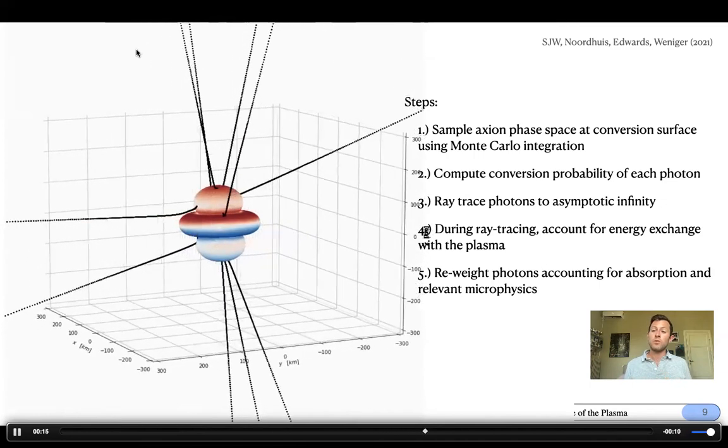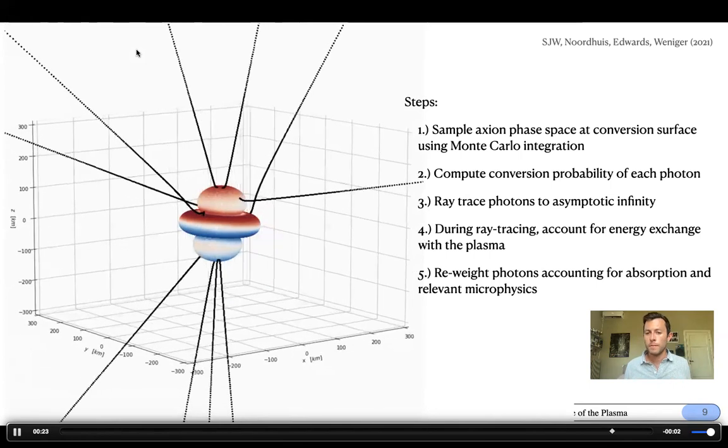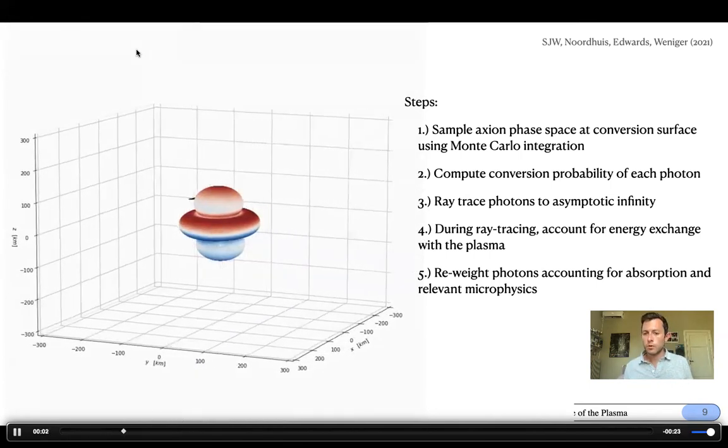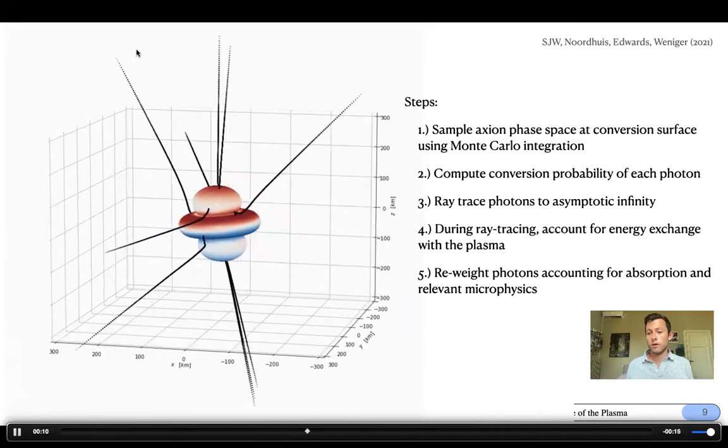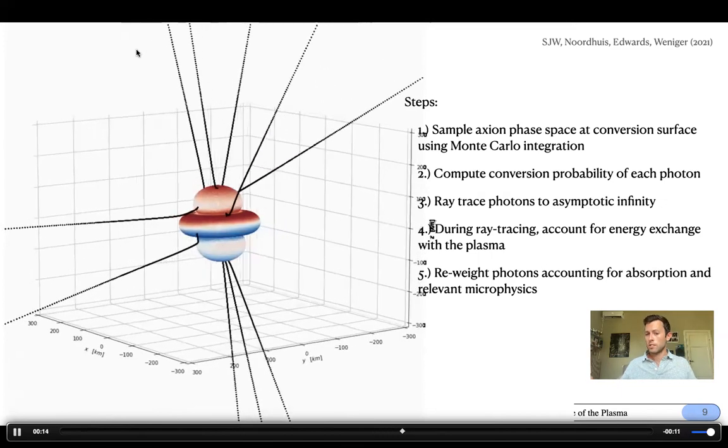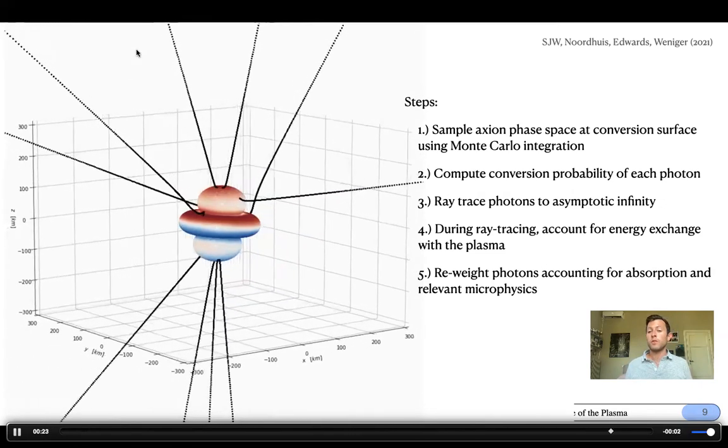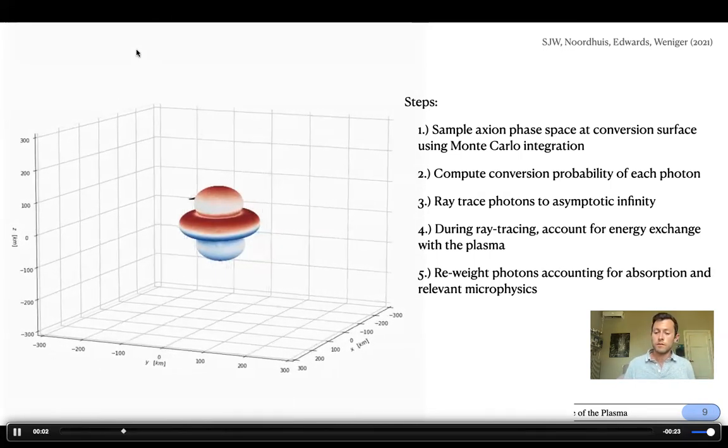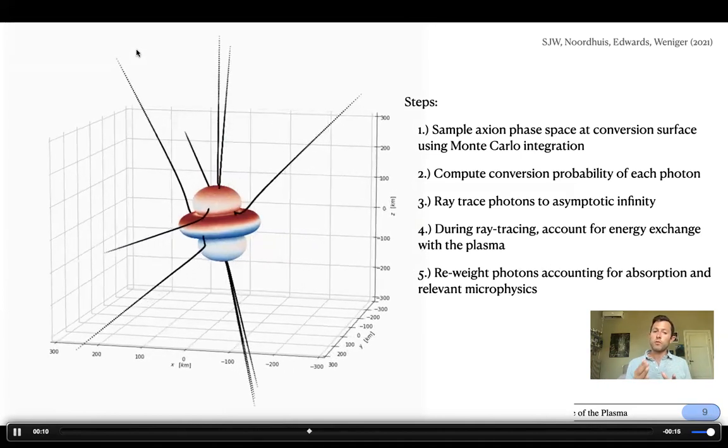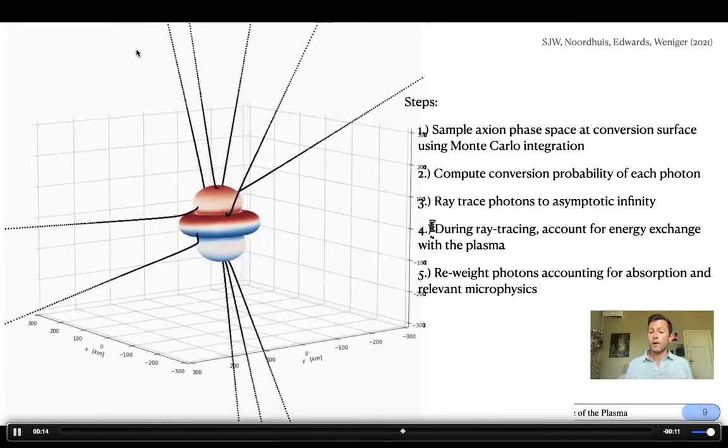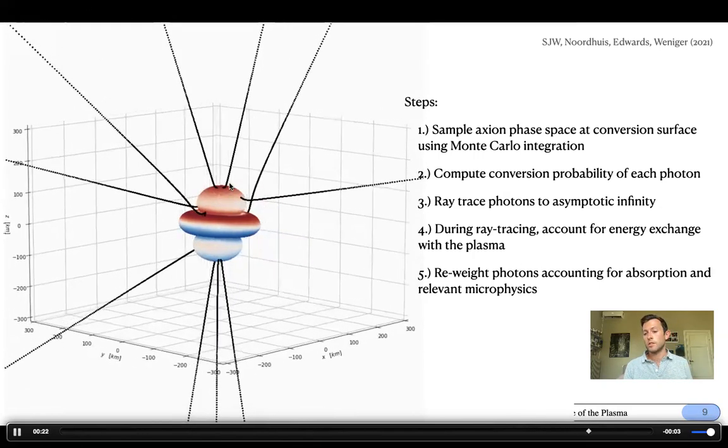We can then compute directly the conversion probability of each individual photon rather than, roughly speaking, categorizing the conversion probability in a sort of approximate way. We then have developed a ray tracing code that allows us to track the photons as they travel to asymptotic infinity. This allows us to deal with the refraction and reflection of photons, which induce anisotropies in the distribution of photons at large distances. During this ray tracing process, we can directly account for energy exchanges with the plasma, and this is going to allow us to directly compute the overall spectral features and spectral characteristics of the photon, of the radio spectral features.